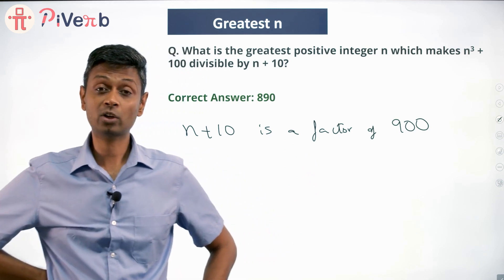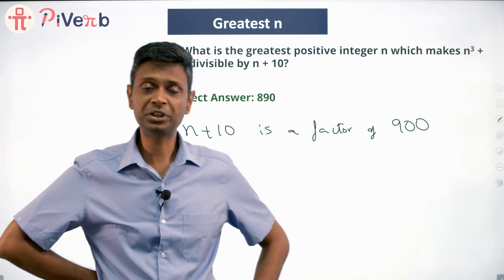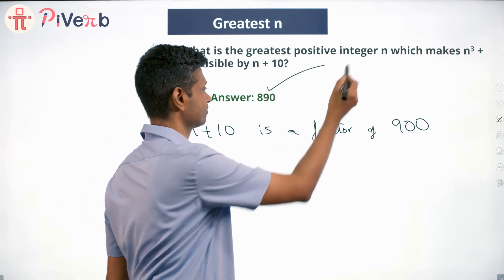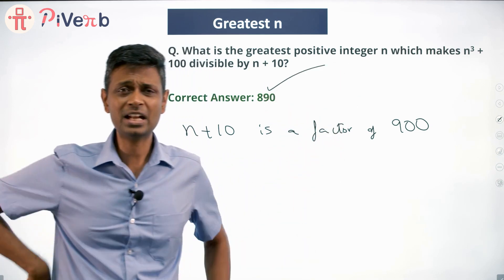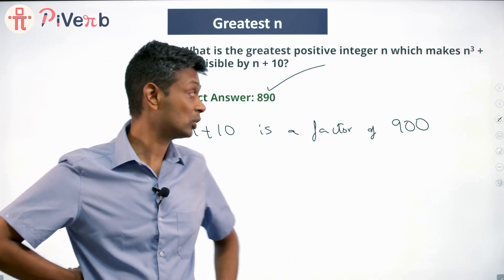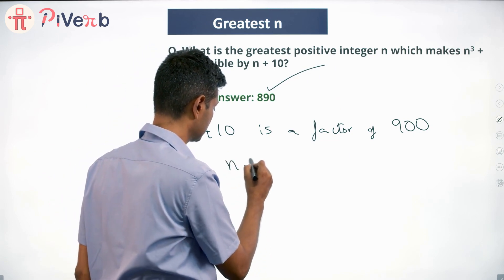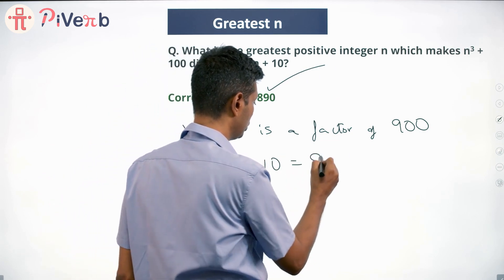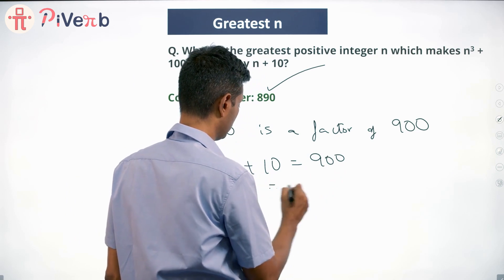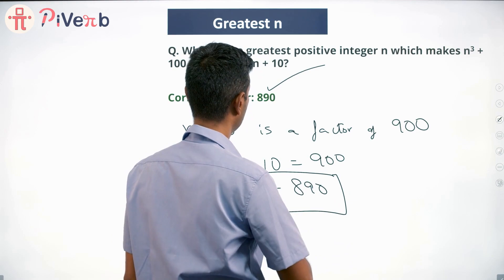We want the largest positive integer n for which this is possible. The largest factor of 900 is 900 itself, so the largest possible value of n plus 10 is 900. If n plus 10 equals 900, then n equals 890. The largest possible value of n is 890.